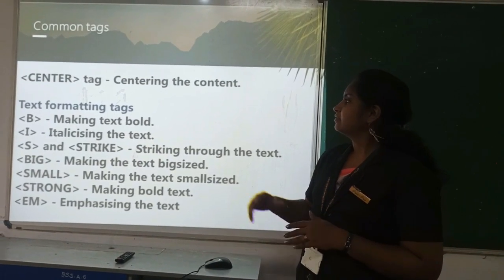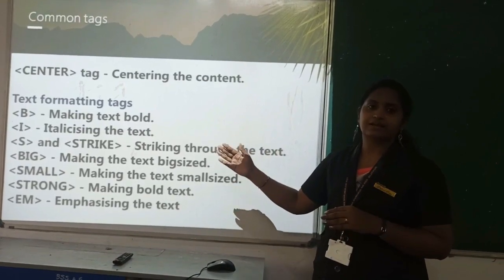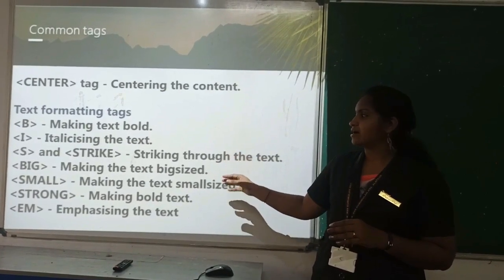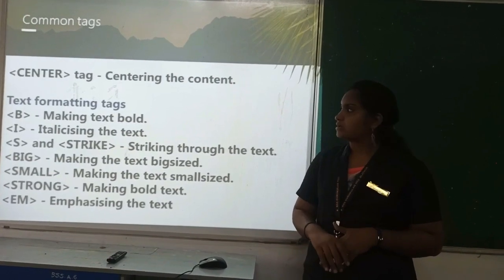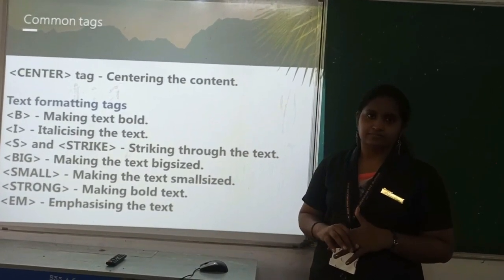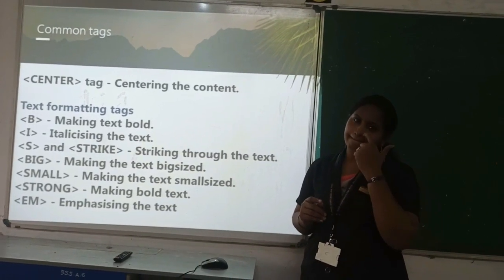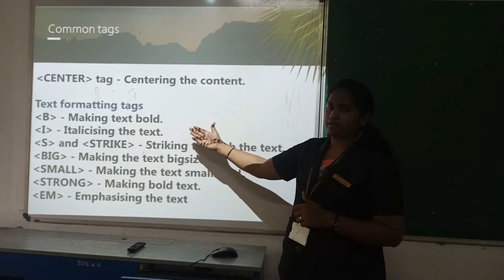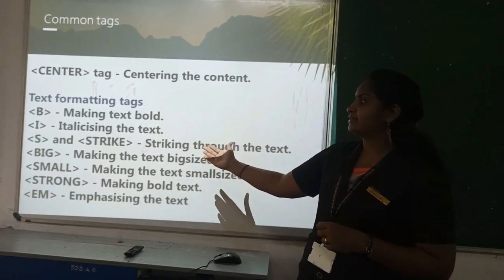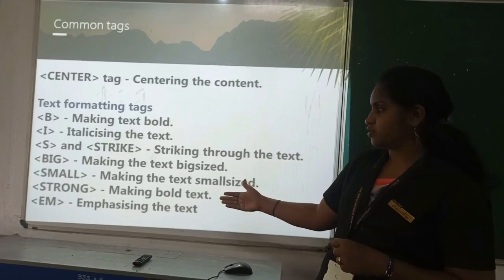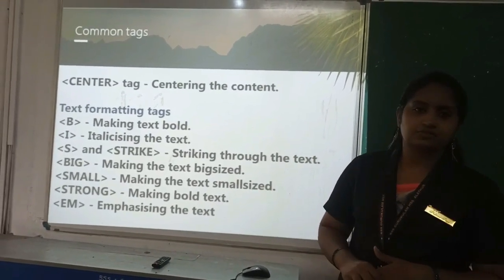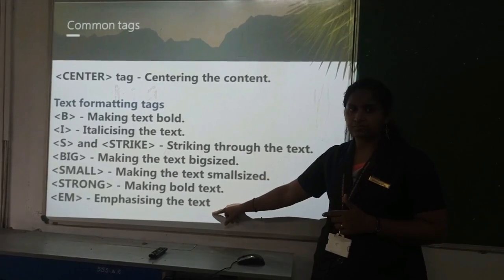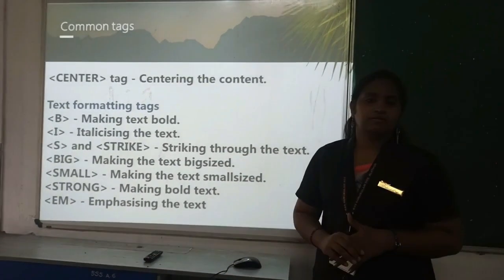The center tag is used to align content to the center. The text formatting tags allow you to make text bold, italic, and other styles. These are container tags — they have opening and closing tags. B is for bold, I is for italics, S is for strikethrough, and big, small, and strong are also available. EM (emphasize) displays text in italics format.